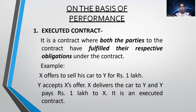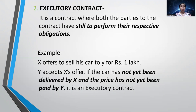On the basis of performance, there are two types: executed contract and executory contract. What is an executed contract? When both parties have completed their respective promises or obligations, it is called an executed contract. For example, X offers to sell his car to Y for one lakh rupees; Y buys the car and pays the money. Here, both parties have completed their respective promises — one delivered the product, the other paid the money.